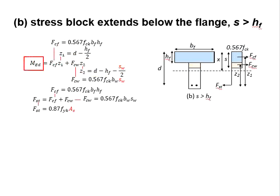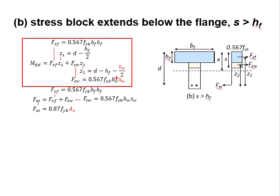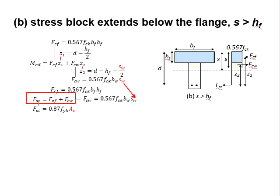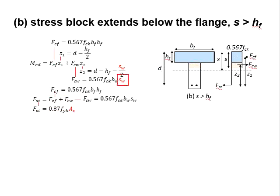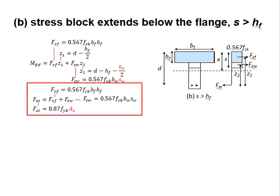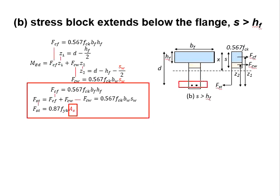With a given moment load, there will be one unknown in the entire equation, which is Sw — the height of the web compression block. You need to solve these equations to determine Sw, which is then substituted into the static equilibrium equation: FST equals FCF plus FCW. With Sw found and substituted, you will have only one unknown, which is As. Solving the equation gives you the required amount of reinforcement bar to be provided at the bottom of the web section.